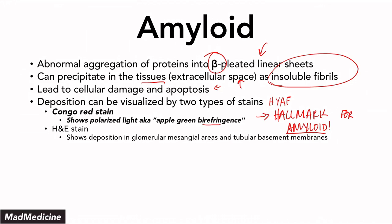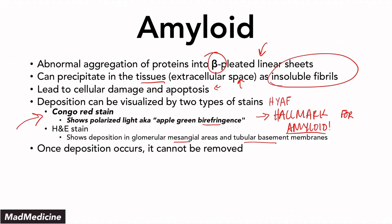H&E stain can also show amyloid deposition and is usually used when discussing the kidney — you'll see glomerular mesangial deposition and deposition in the tubular basement membranes. But that's not as high yield as Congo red staining, because if you see Congo red staining on any exam, it should tell you exactly what the pathologic condition is. Once deposition occurs, it cannot be removed. The only way to fix the damage in an organ is through transplant, which is the only known treatment for amyloid deposition.